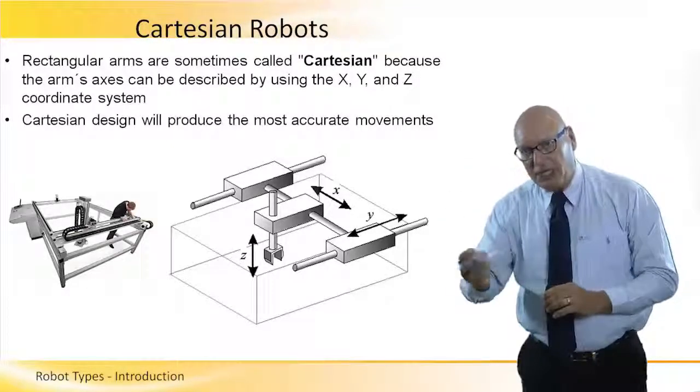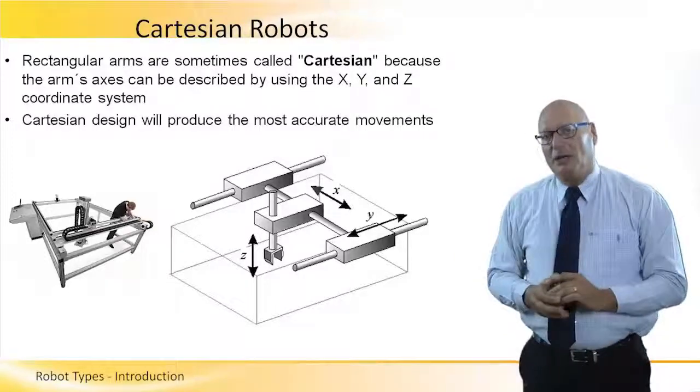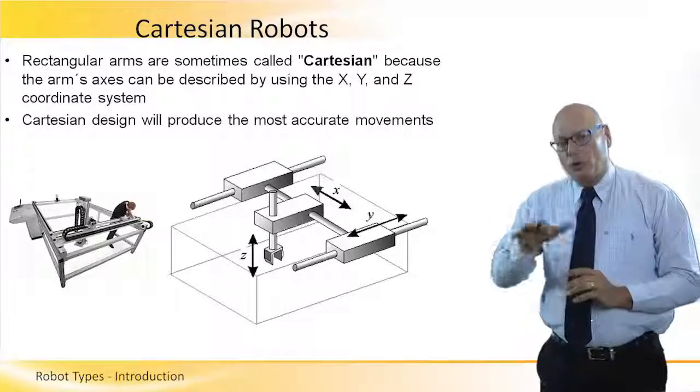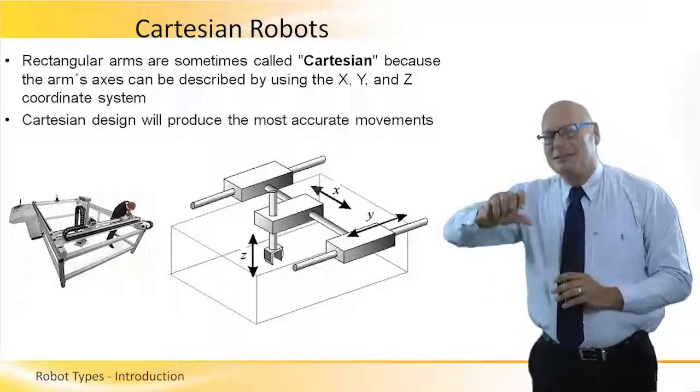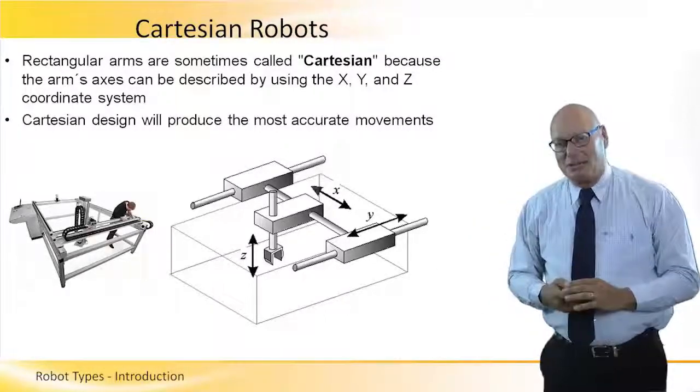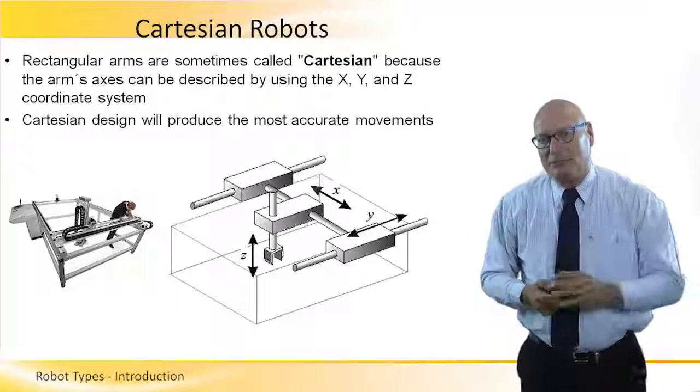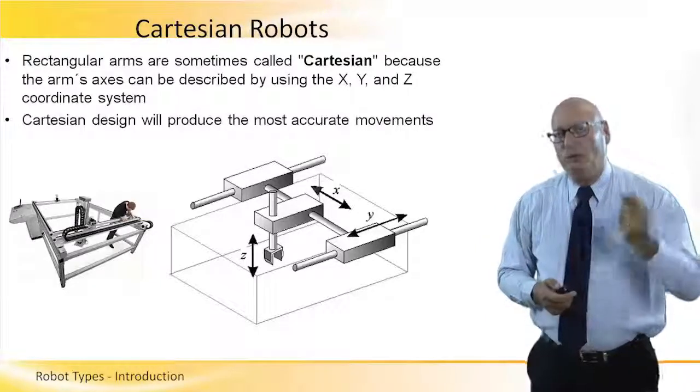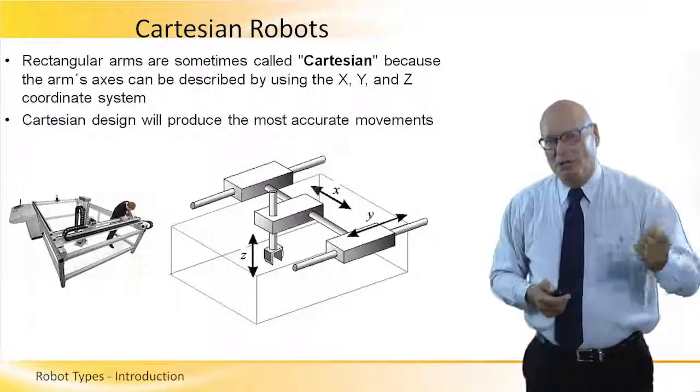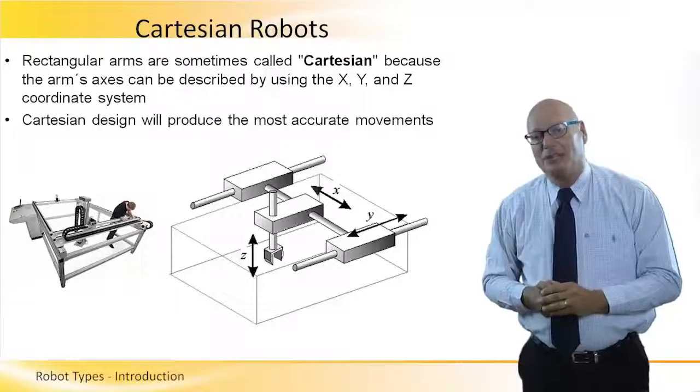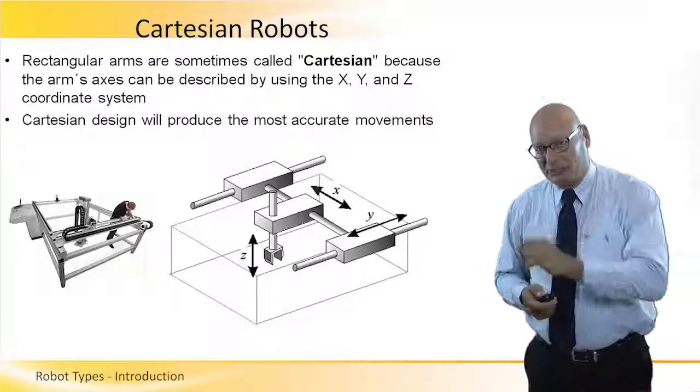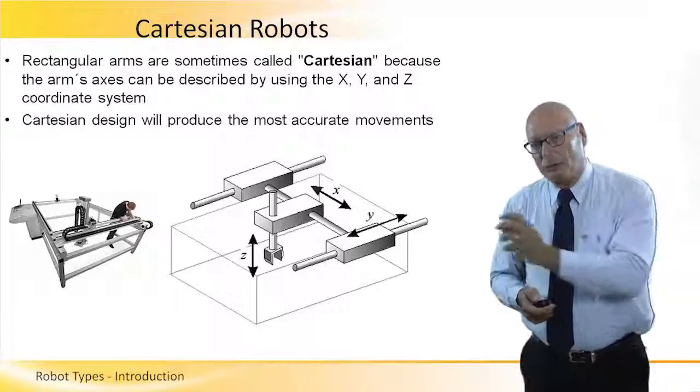So either three X, Y, Z automatic axes or two automatic axes X and Y and manually the Z axis. CNC tables are basically two-and-a-half axes Cartesian robot. CNC tables, computer numerical control tables.